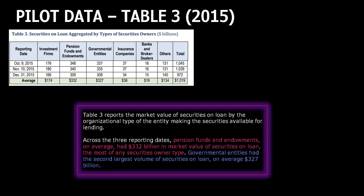Table 3: securities on loan aggregated by types of securities owners. Investment firms: 174 billion. Pension funds: 332 billion — the most. Across the three reporting dates, pension funds and endowments on average had 332 billion in market value of securities on loan, the most of any securities owner type. Governmental entities had the second largest volume on loan, on average 327 billion.